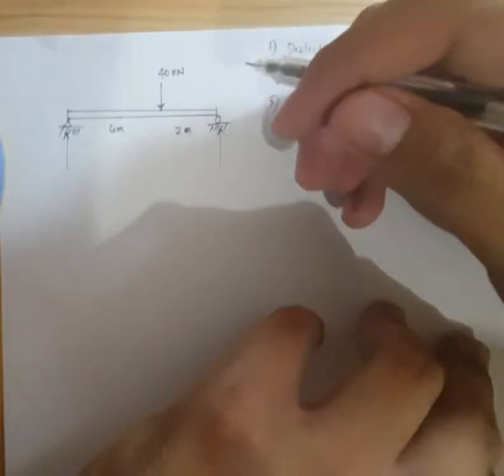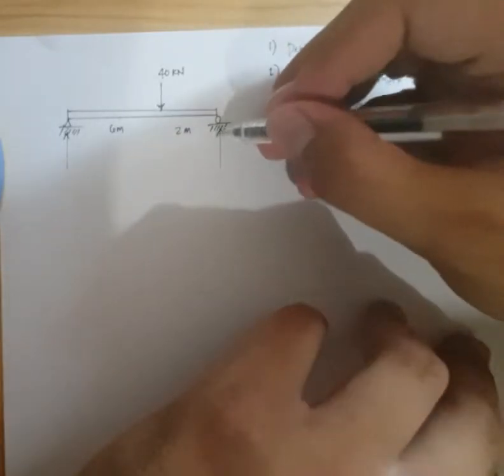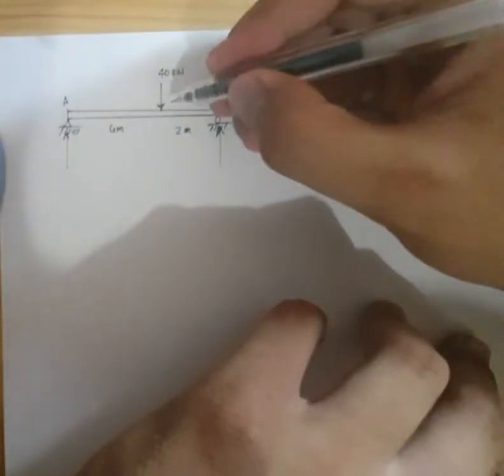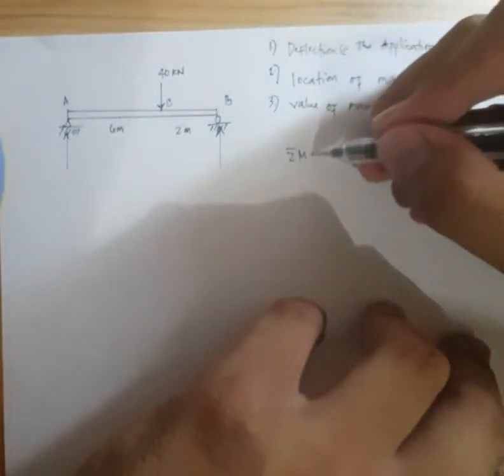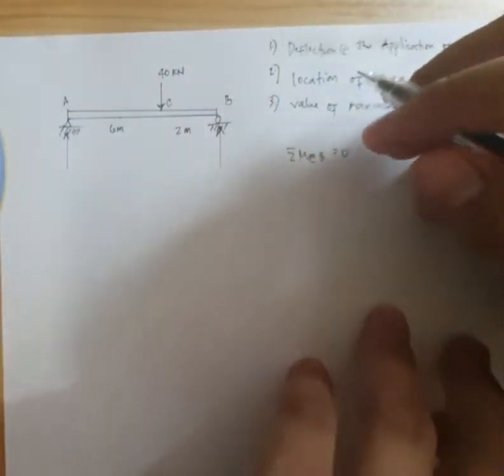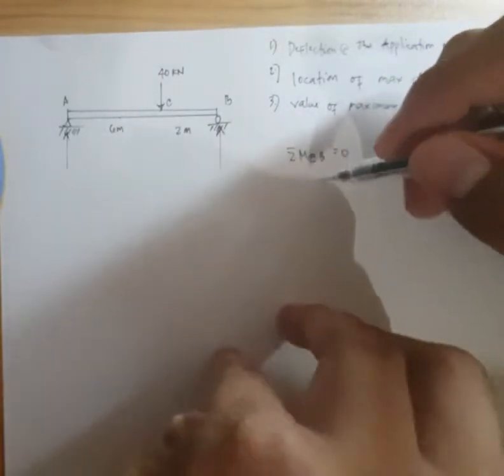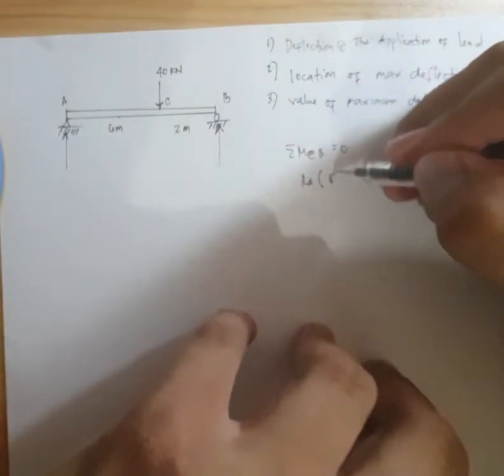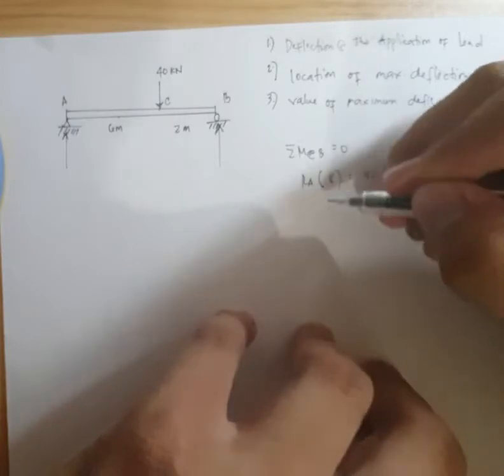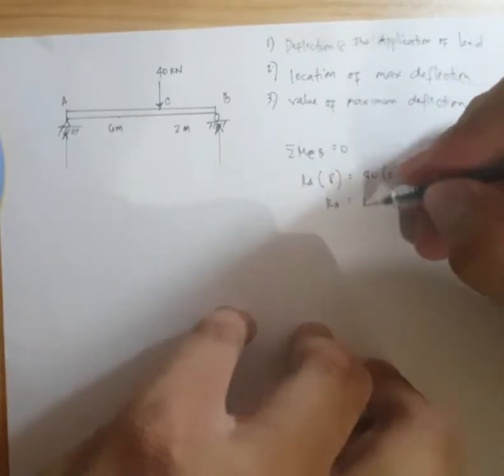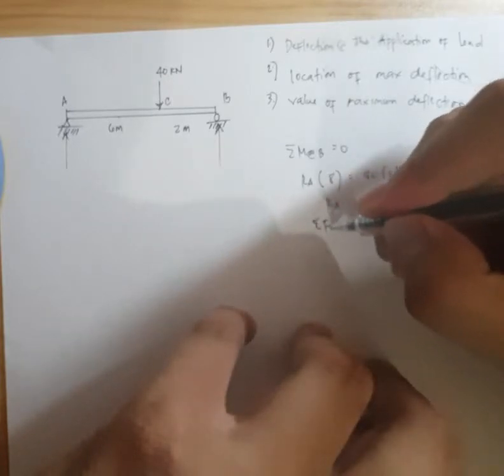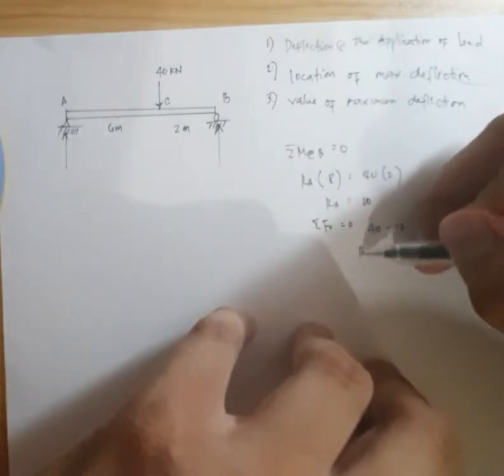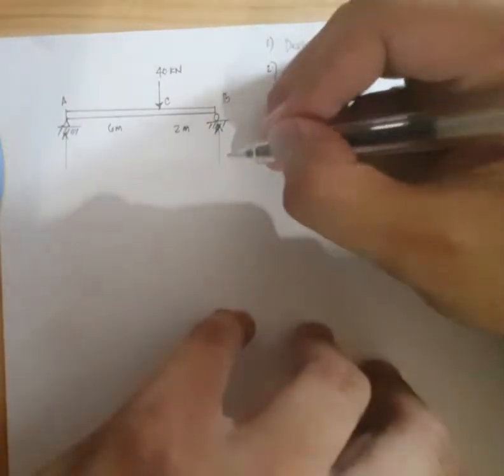Para makuha ang shear and moment, then the moment will become the load on the fictitious beam. Okay, so summation moment, let's say this is point A and this is point B. This is point C. Moment at B equal to 0. So Ra times 8 is equal to 40 times 2. Ra is 10. Summation force vertical equal to 0. 40 minus 10. So, Rb is 30. So, this is 30 and this is 10.